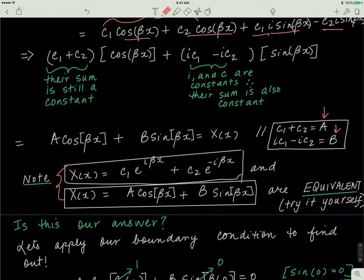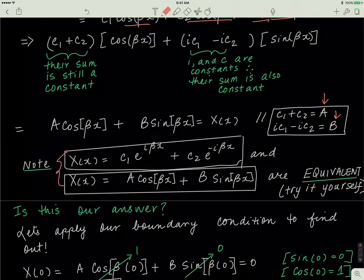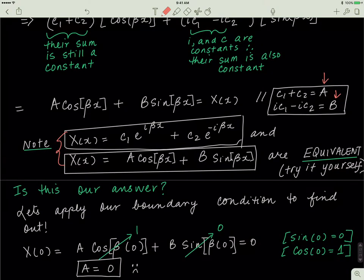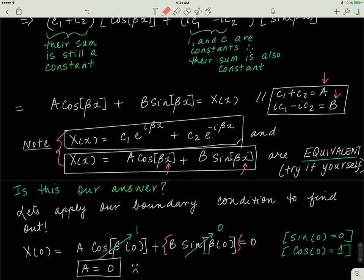The important question is: is a cos beta x plus b sine beta x our answer? Let's apply boundary conditions. The boundary conditions are X equals zero at x equals zero and at x equals L. Plugging in x equals zero: sin(0) equals zero so the sine term disappears, and cos(0) equals one, so a equals zero. That doesn't look great, but we continue — we know a equals zero and b is still unknown.